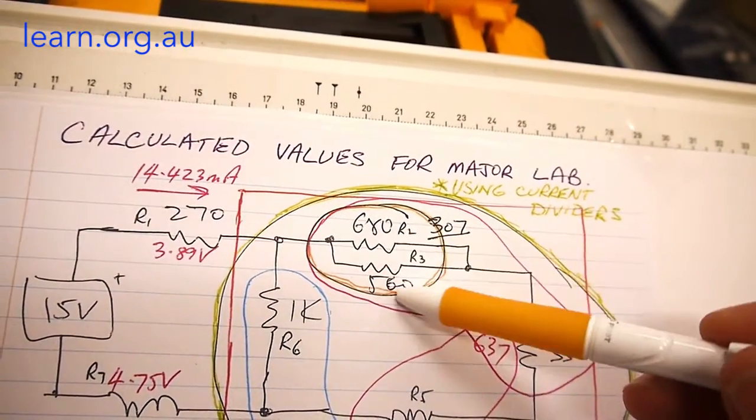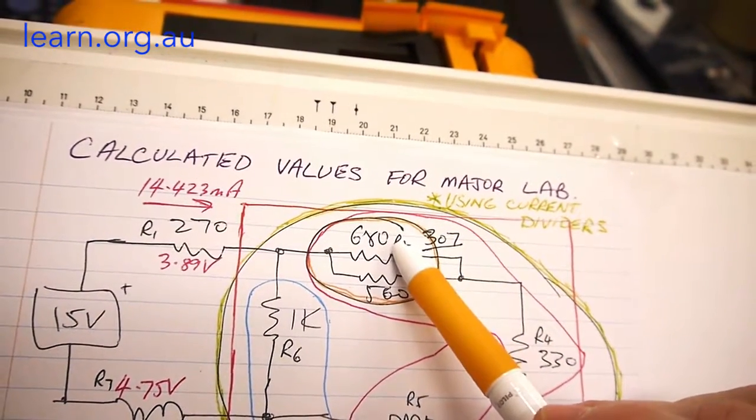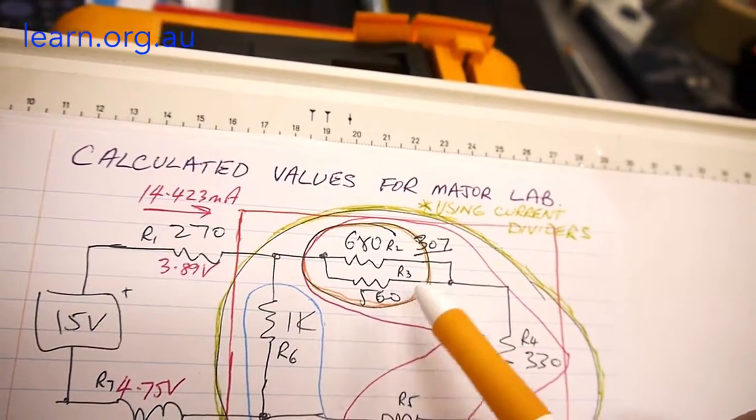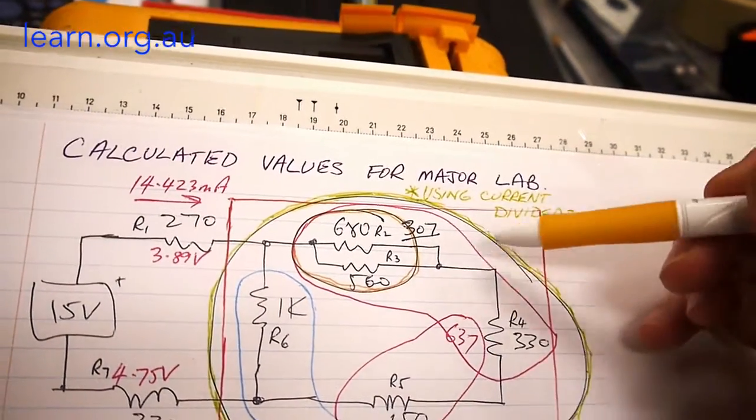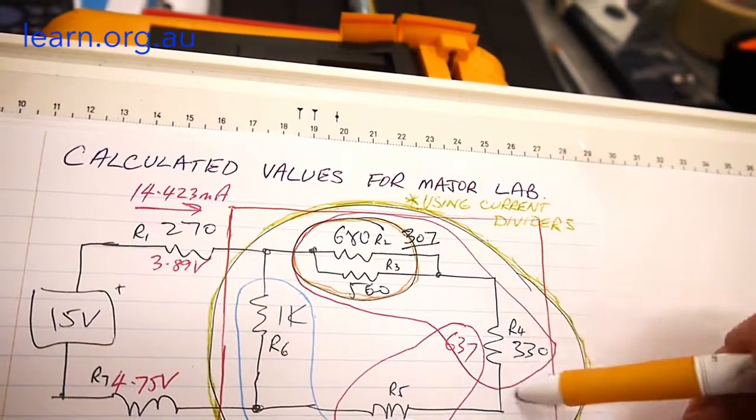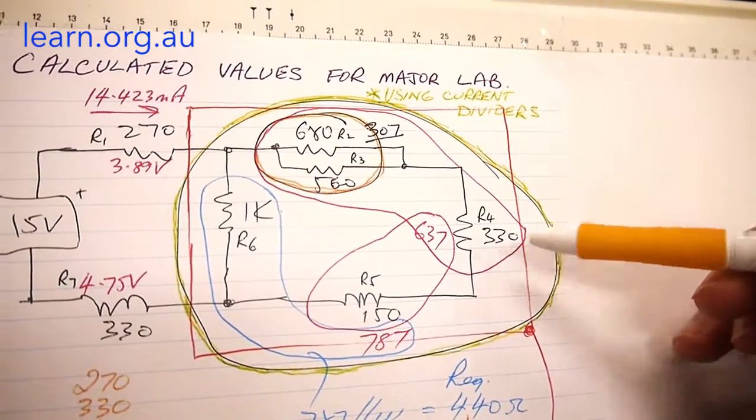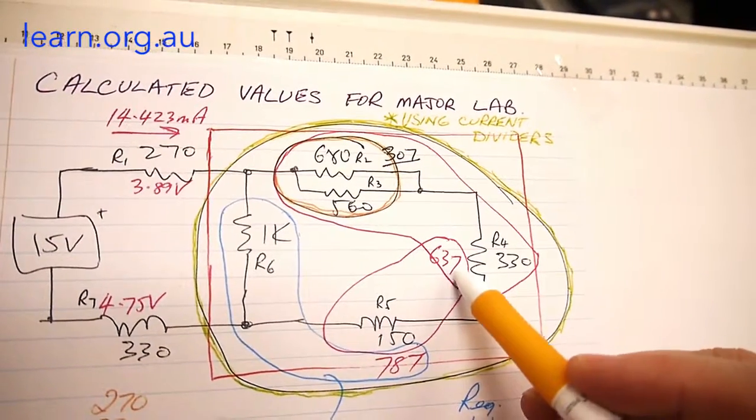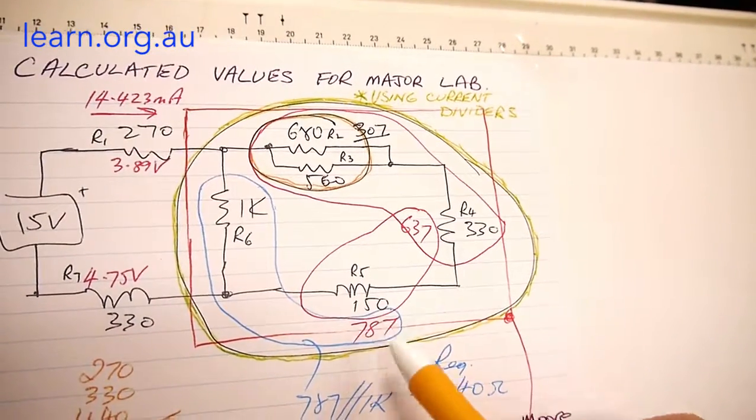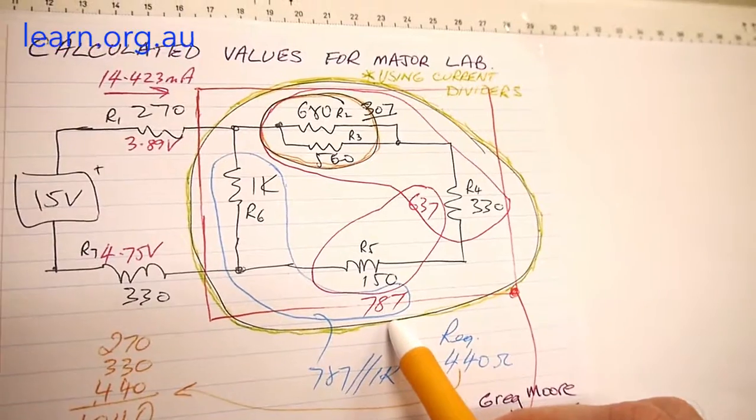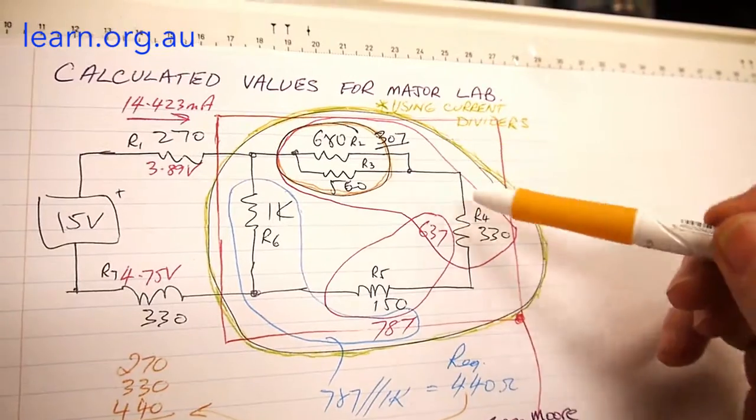First of all the 787 ohms, that's these two resistors in parallel. I put a loop around first and then I've done the calculation: 1 on 680 add 1 on 560 equals 1 on the answer, 307 ohms. Then I put another red loop around that because that 307 is in series with the 330 to give me 637.